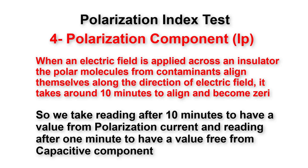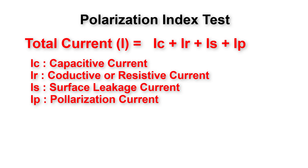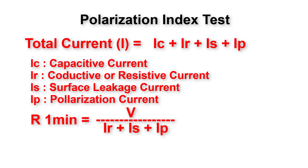We take the reading after one minute to have a value free from capacitive current. So the total current I equals: capacitive current Ic, plus resistive or conductive current Ir, plus surface leakage current Is, plus polarization current Ip. The mega reading at one minute is without capacitive current, so R(1 min) = V / (Ir + Is + Ip).